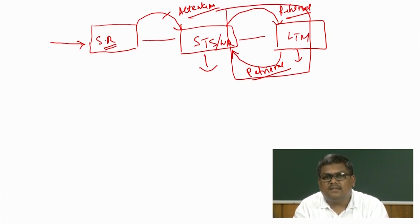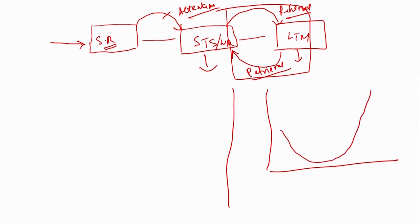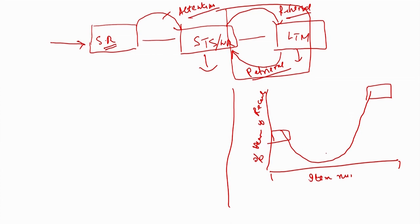The question is: what is the evidence for the existence of this long-term store? Let us quickly look at the idea of the serial position curve. In the experiment, a list is given to people to read, and once read, they are asked to retrieve it. What we see is that if we look at percentage accuracy of recall on one axis and item numbers on the list on the other, items which are recent tend to be retrieved more, and items at the beginning of the list also tend to be retrieved more, whereas items in the middle are not retrieved.